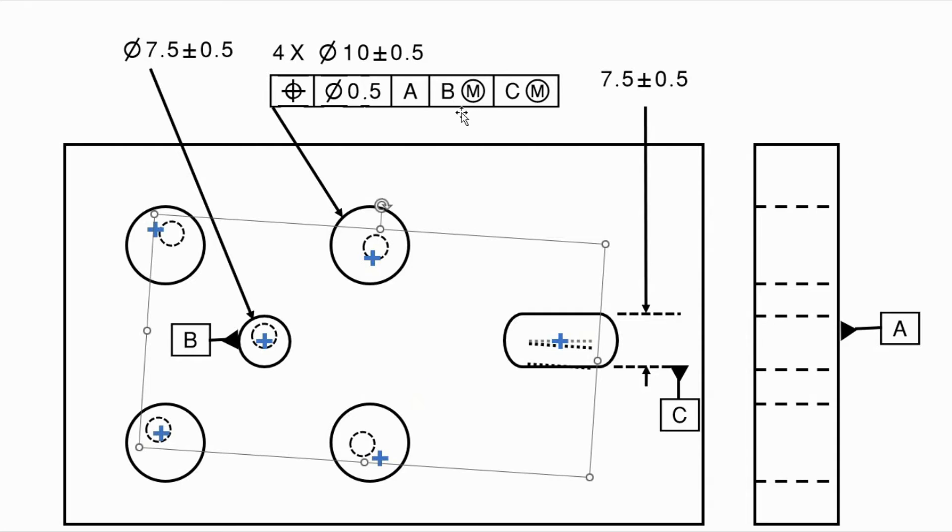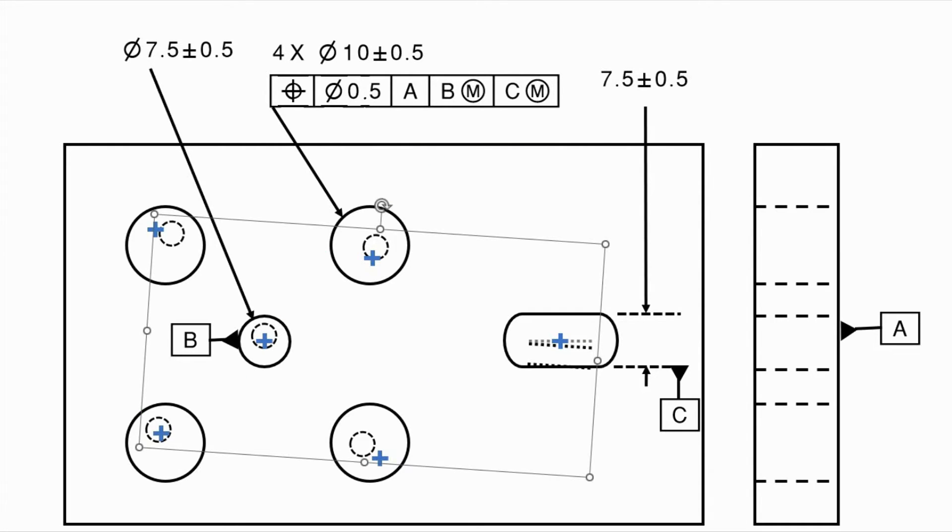And that's the default for Y14.5 for ISO. And as a note to Y14.5, you can have this thing called separate requirement. Now, this is the default for ISO GPS. And what does that mean?